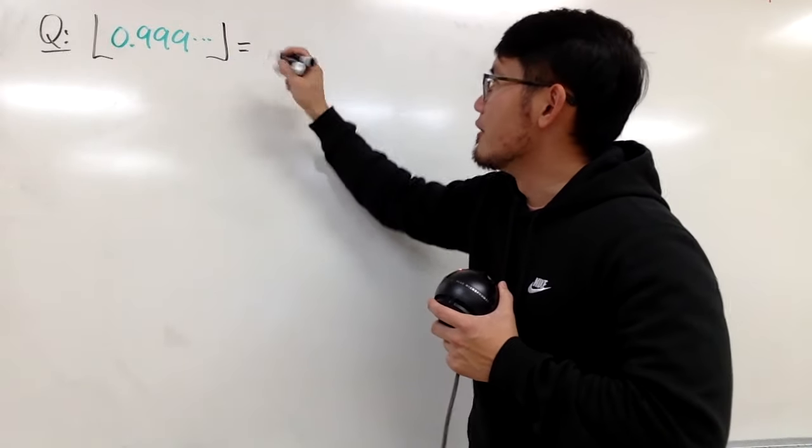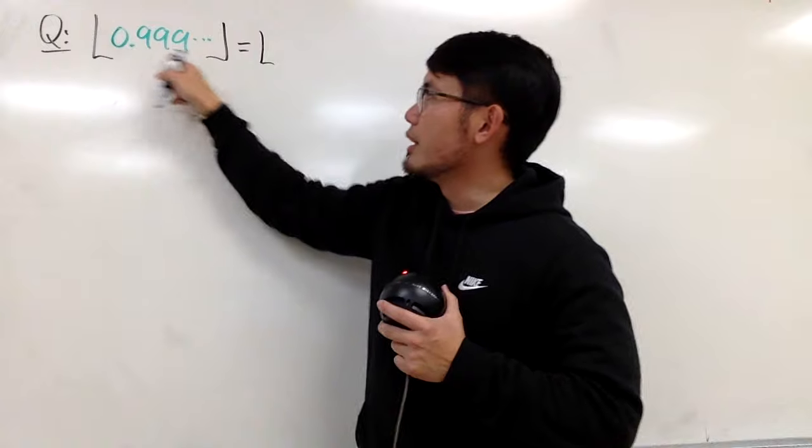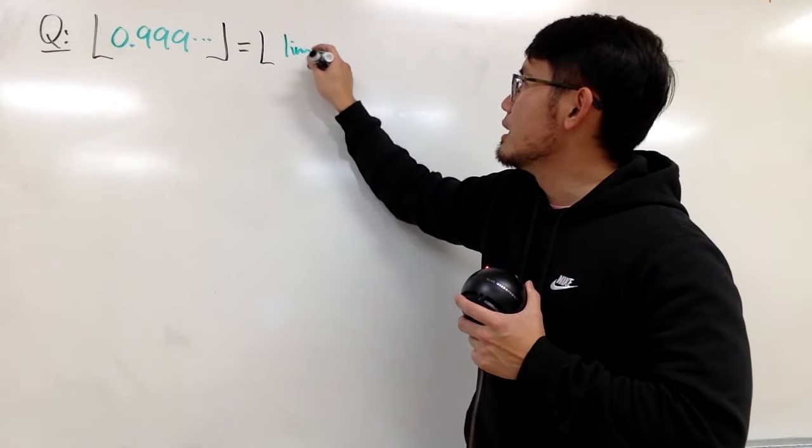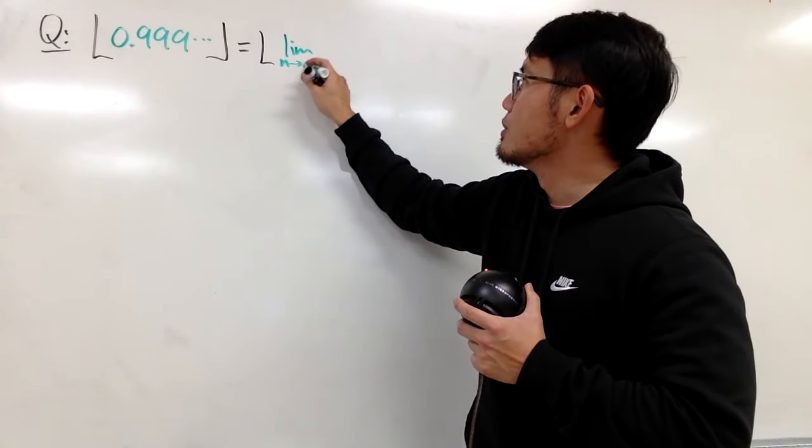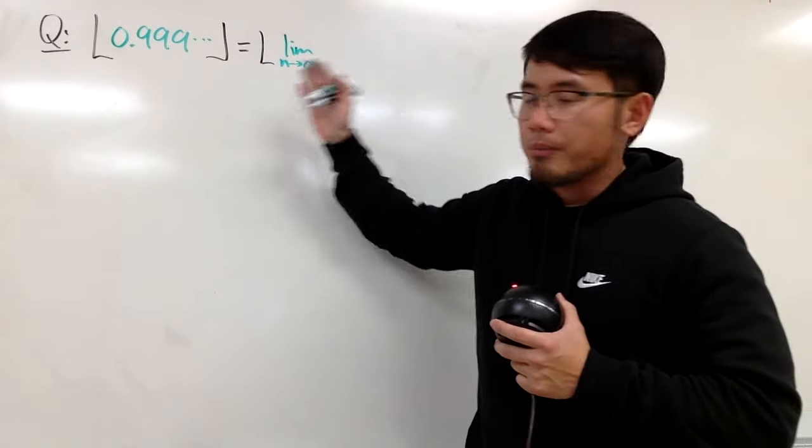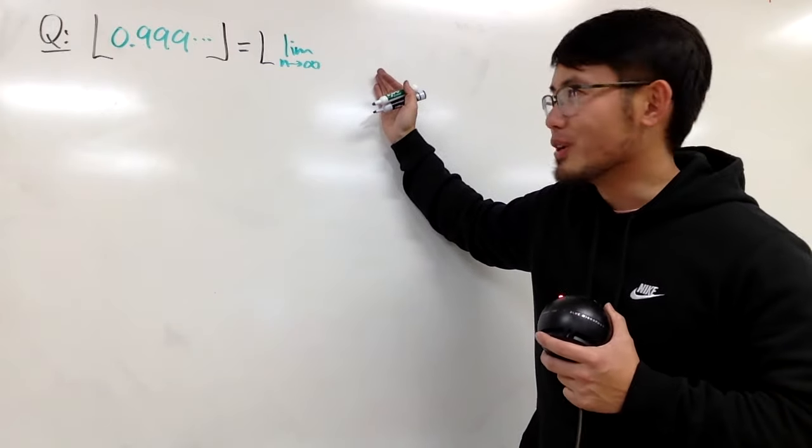First, I will keep the floor function, and let me just write this down in the limit form. It's the limit, and we can write it as n goes to infinity. So, this is just one way to write it. I'll just write it the easy way.